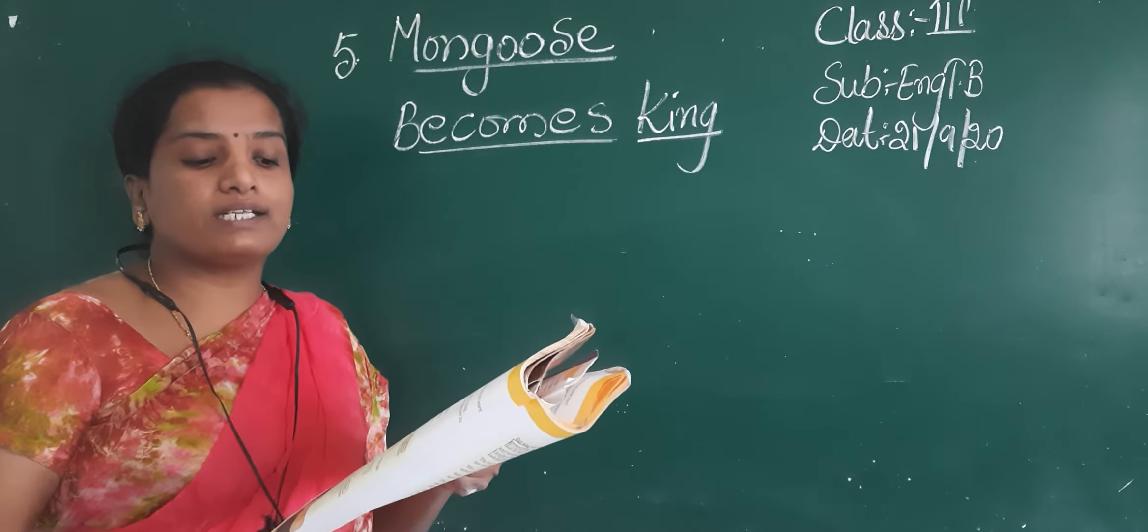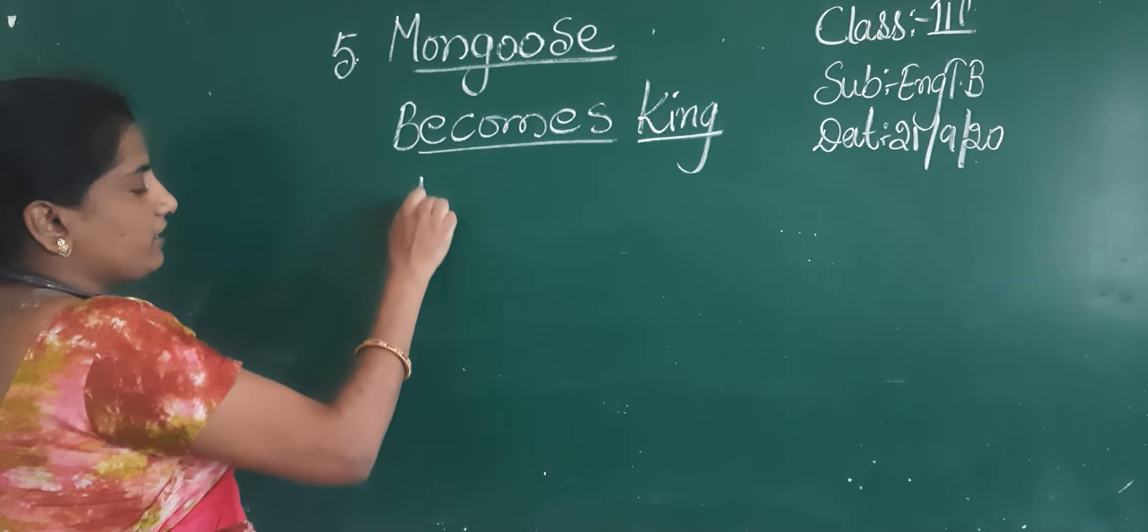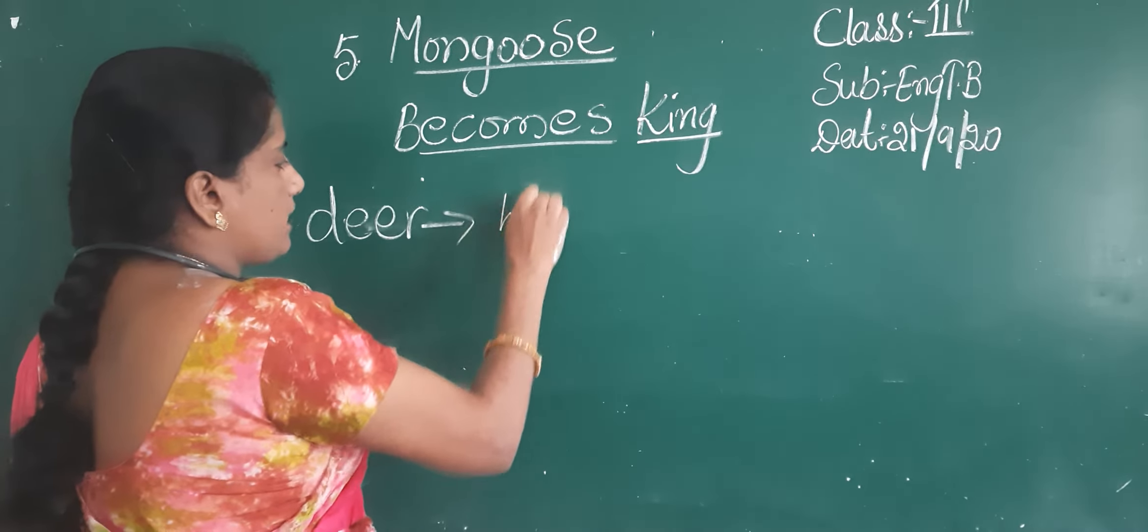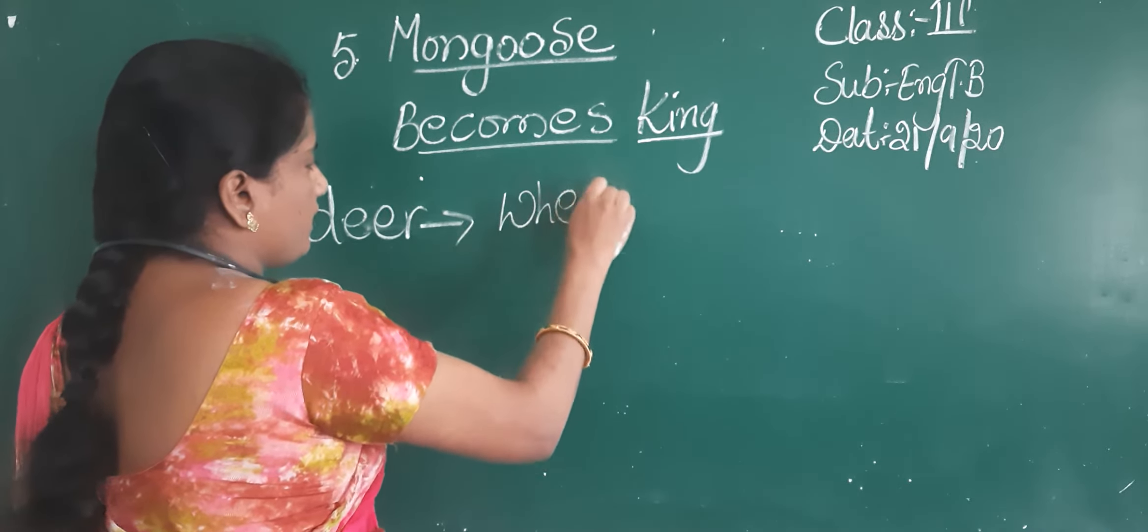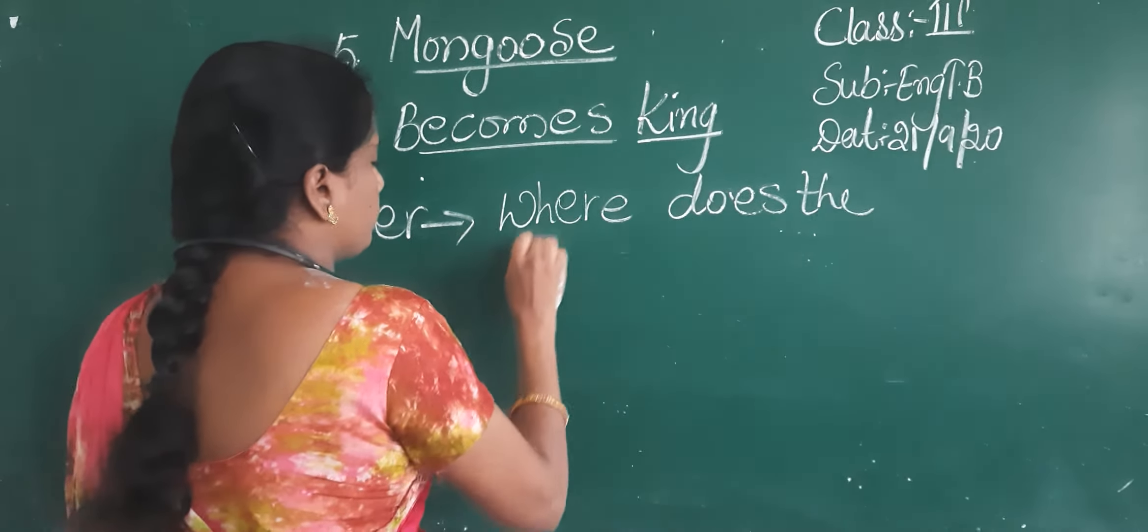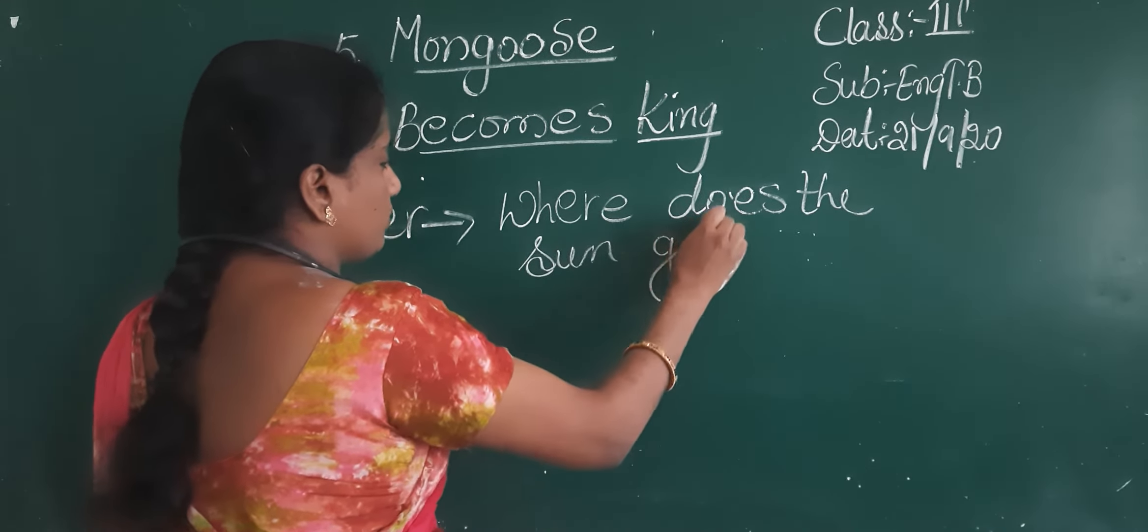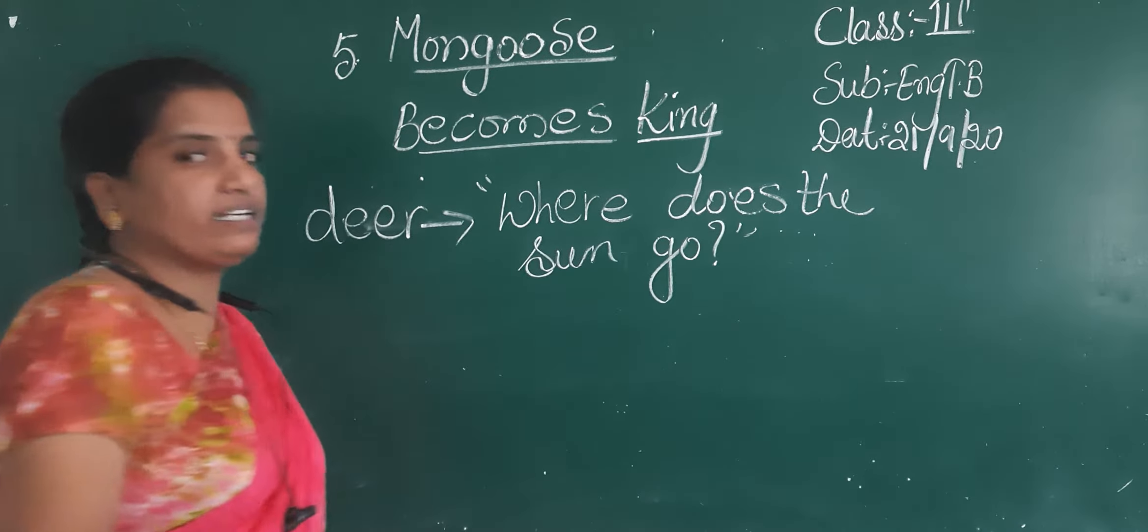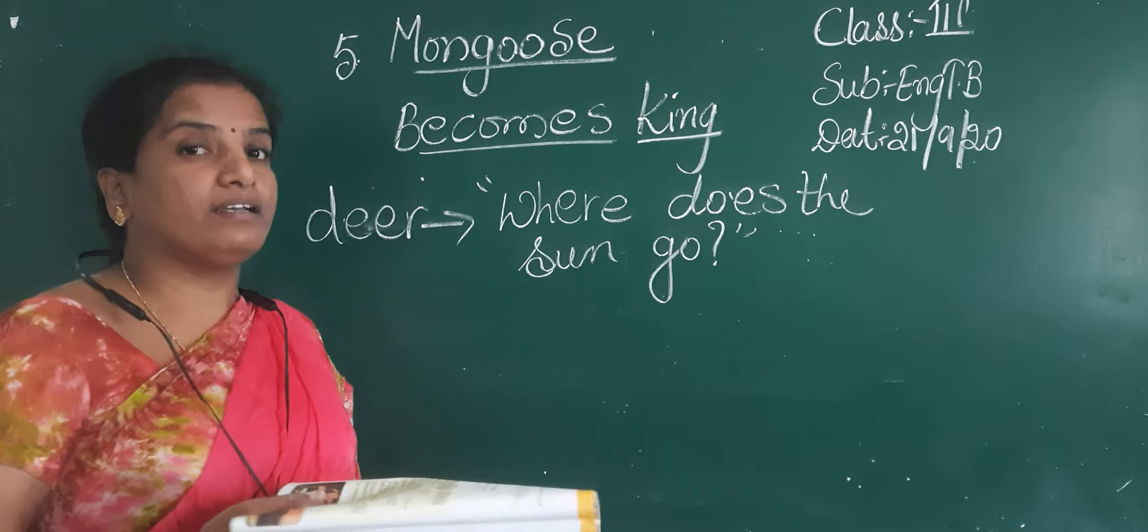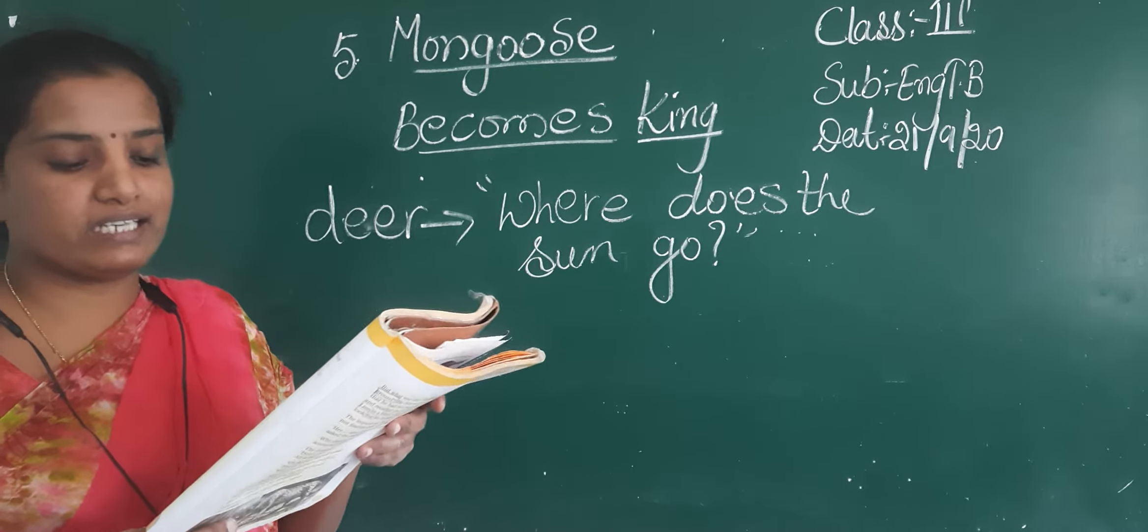We are talking to each other. Where does the sun go? Ask the deer. Now the deer is asking. What the deer is asking? Where does the sun go? Where does the sun go? In the sunset the sun will set. So what the discussion is going on about the sunset? Here see. Have a look. It goes behind that hill and sleeps there.